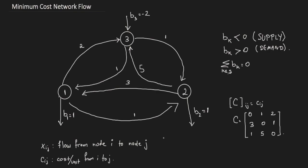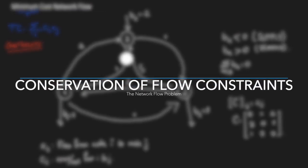The total cost of the network is the summation over all i and j of cij times xij, which we want to minimize. The problem is to find the xij values — we have nine variables in total, most of which will be set to zero due to the nature of the problem, so the solution is sparse. This is an optimization problem in the xij variables.